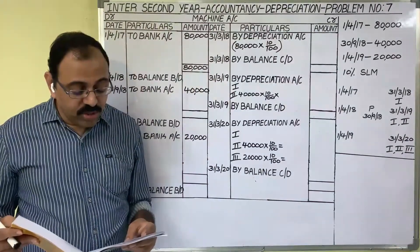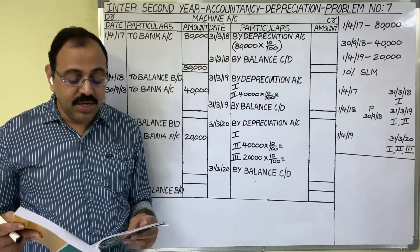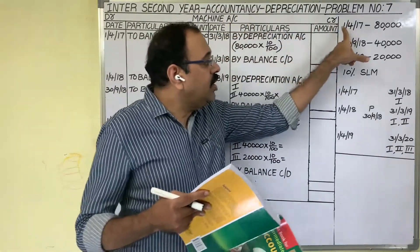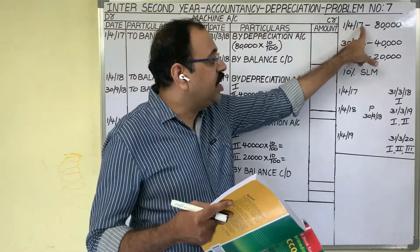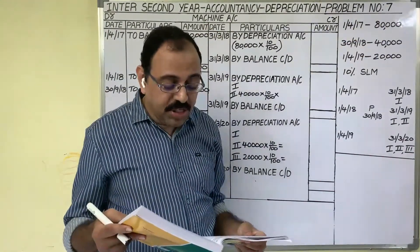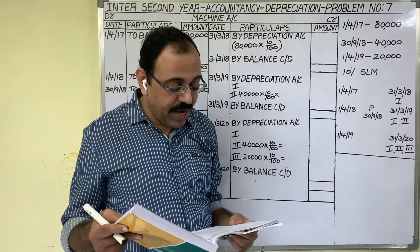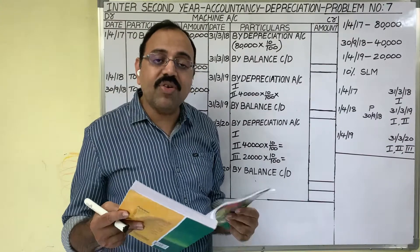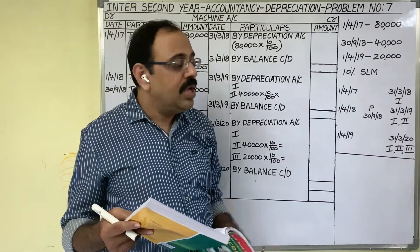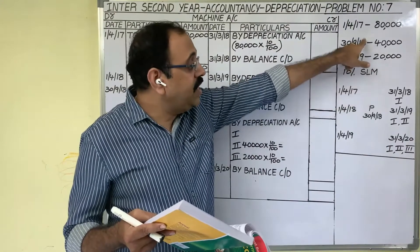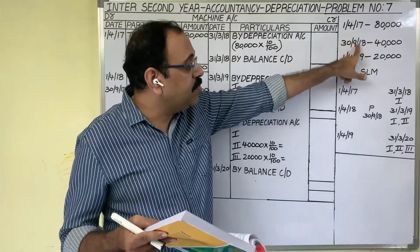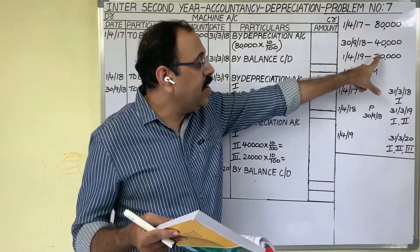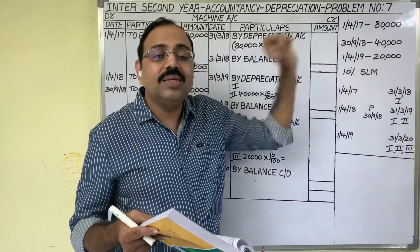On 1st April 2017, a firm purchased a machine for 80,000 rupees. Additional machinery was purchased on 30th September 2018 for 40,000 rupees, and on 1st April 2019 for 20,000 rupees. In this 7th problem, they bought 3 assets in total.